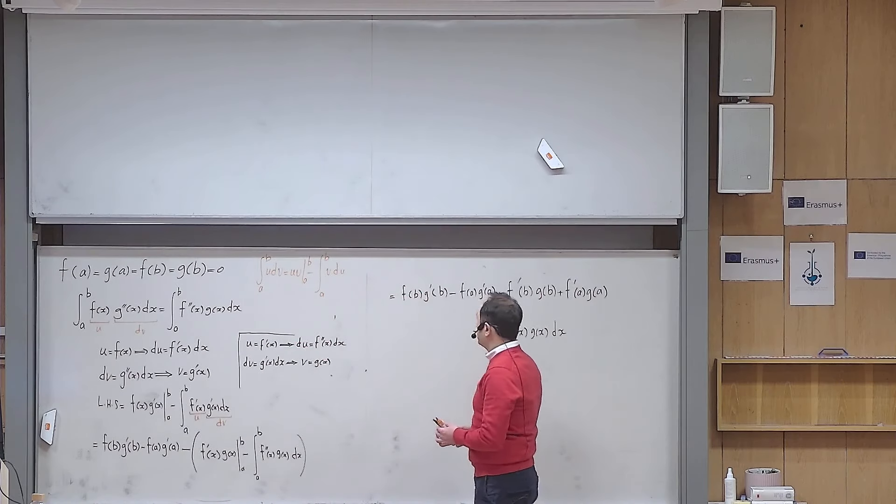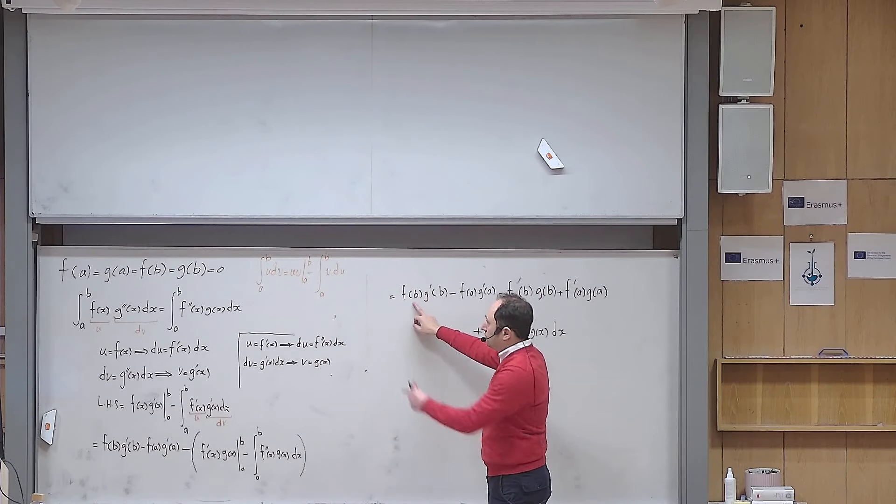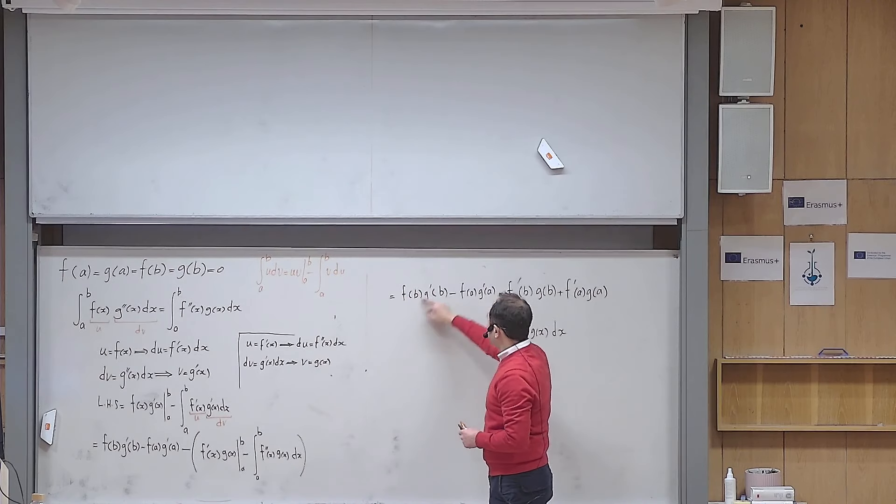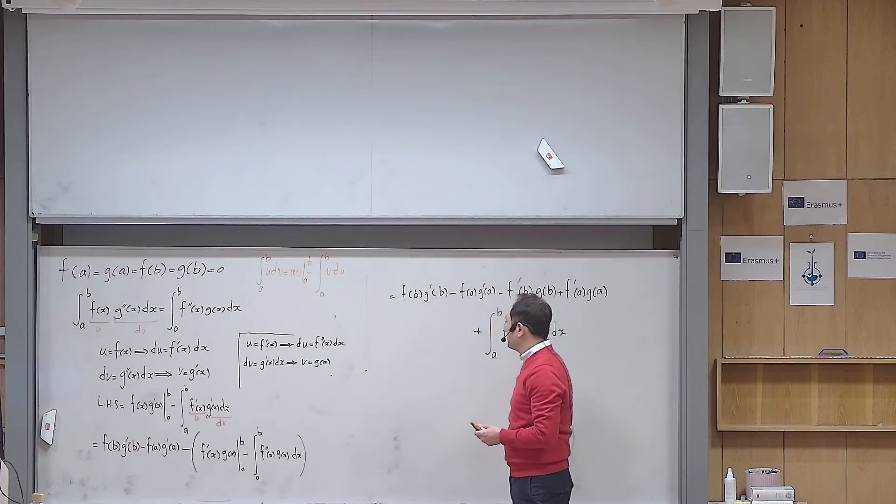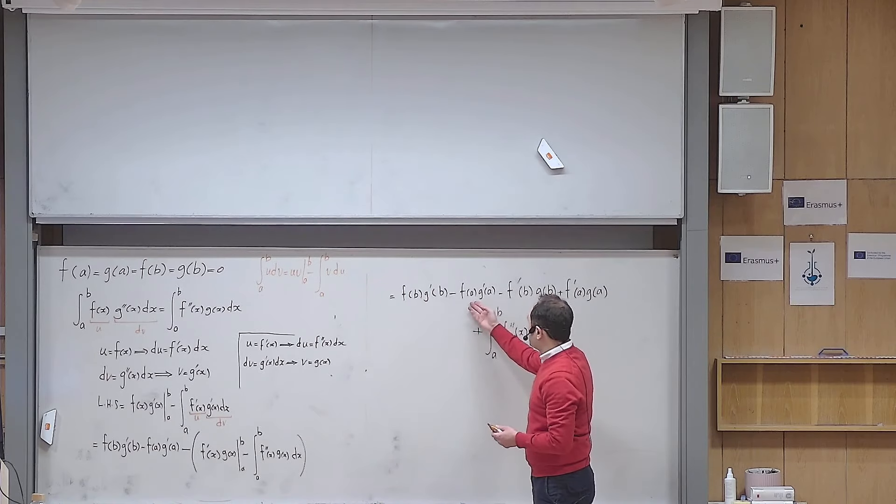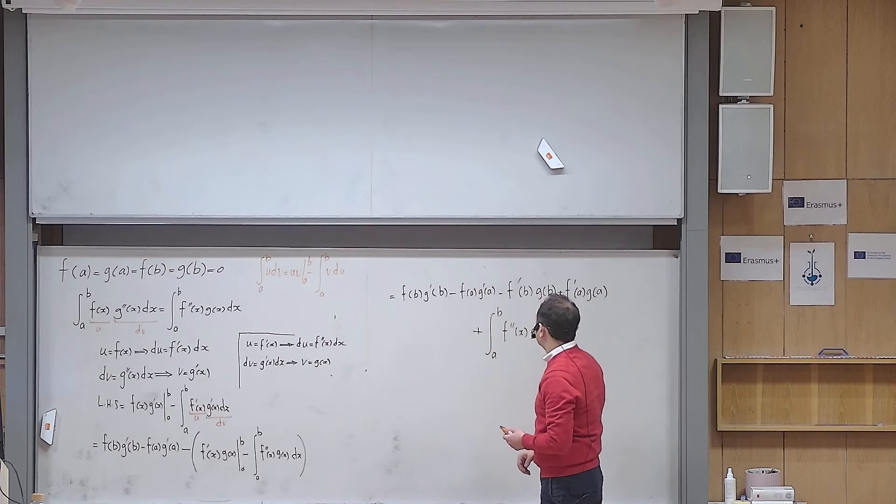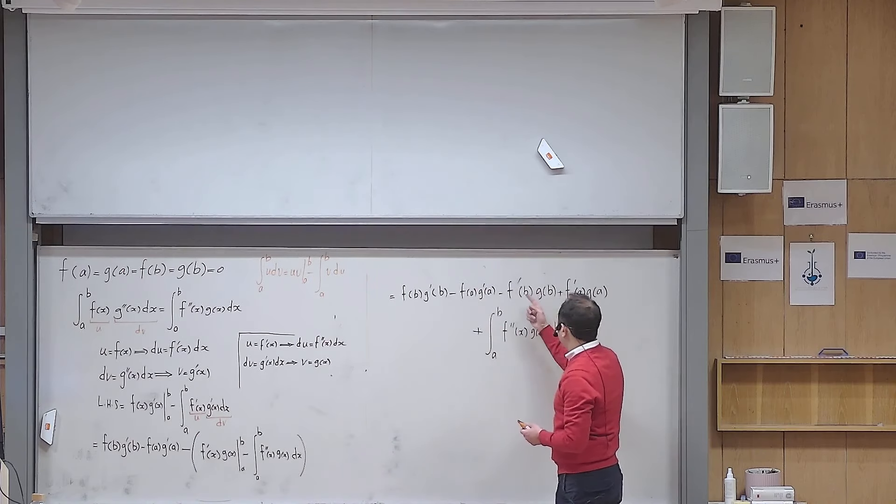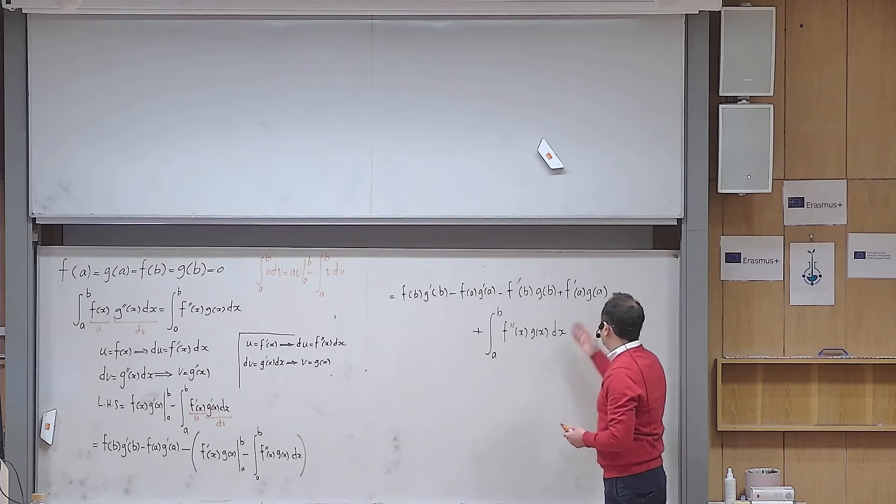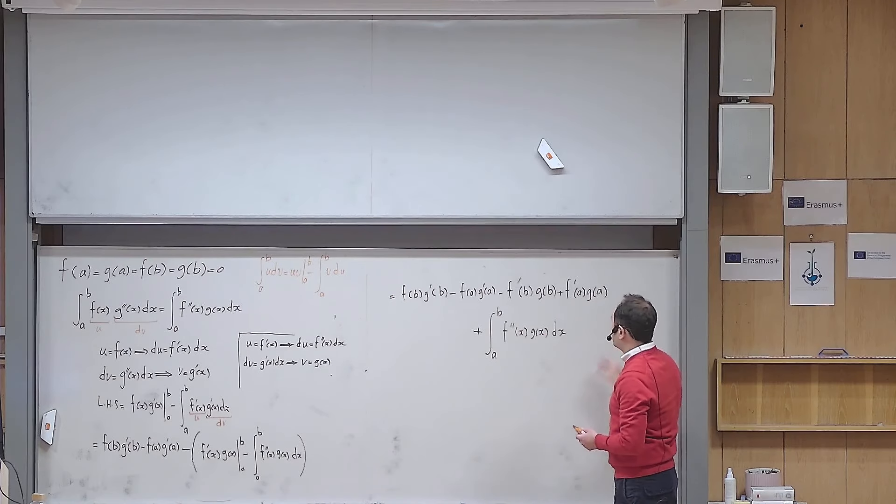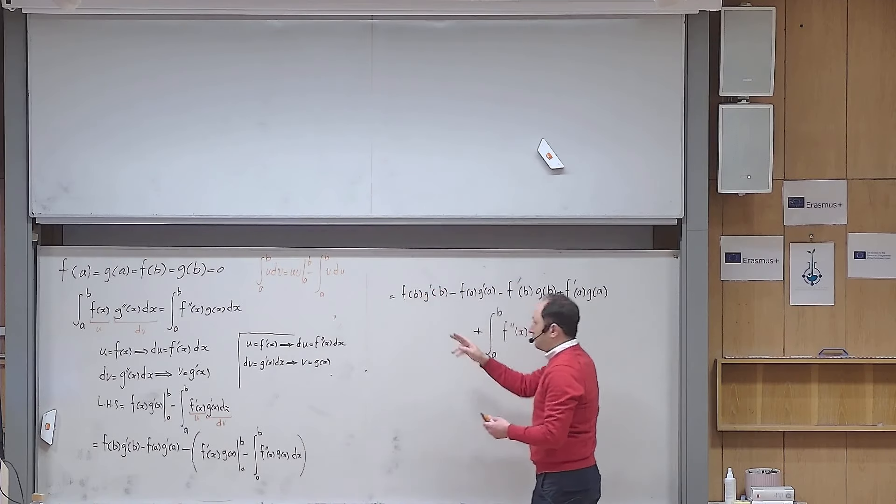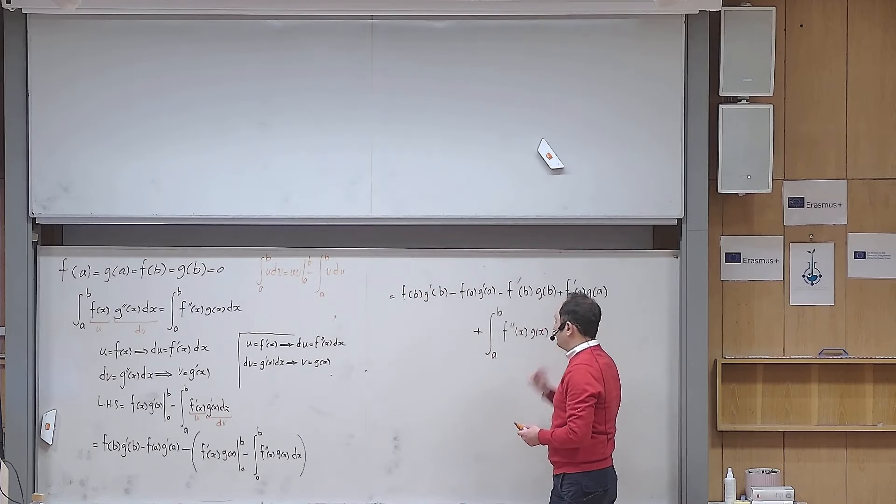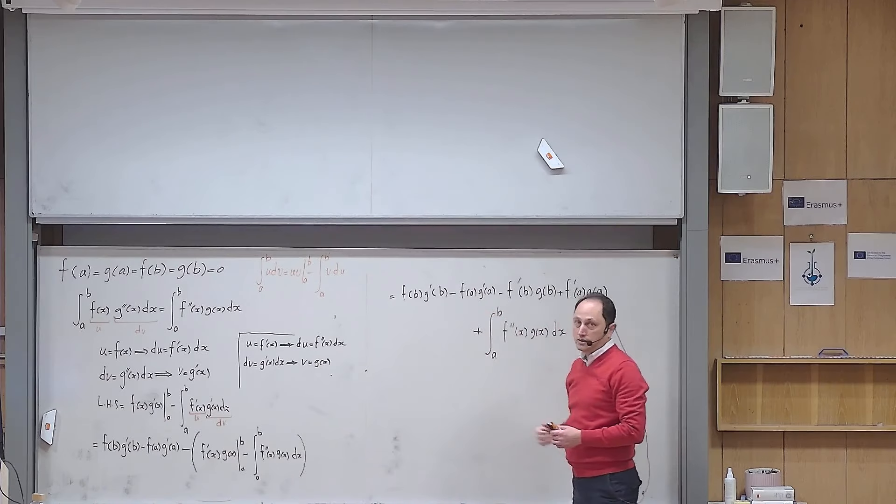But now you see that if I use those conditions, f(b) is 0, is given. So this term will vanish no matter what g is. But I know that g is twice differentiable. So I don't have any problems with g'(b). The same story here, f(a) kills that one. Here, I don't know f'(b), but I know g(b) is 0. Here, I also know that g(a) is 0. So this is nothing except 0. And then I have my left-hand side equals to the right-hand side under that circumstance.